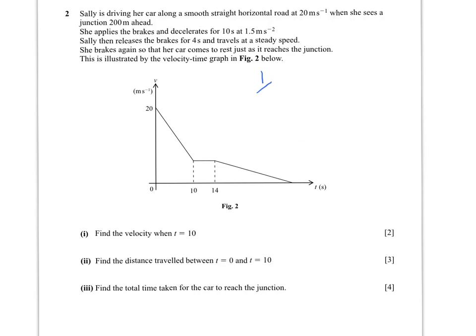So if we look at part 1, the initial velocity is 20. We're trying to find the velocity when t equals 10.